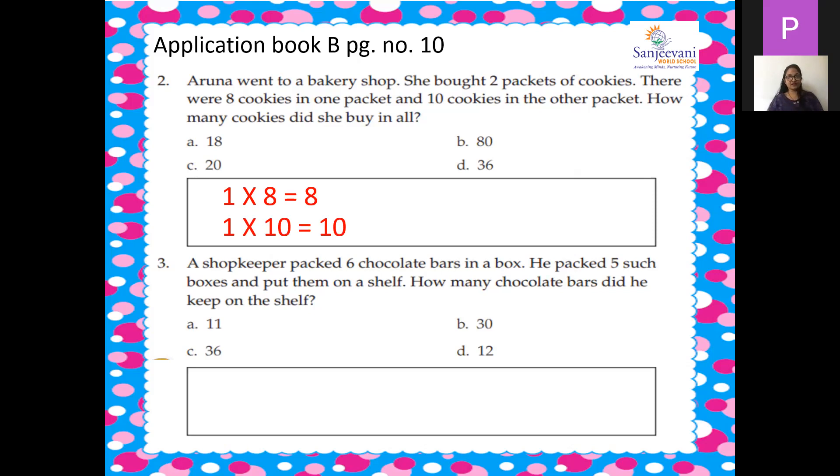Now I know the number in both the packets. So now I will add 8 plus 10 is equal to 18 cookies. So first I did the multiplication and then there is the addition.